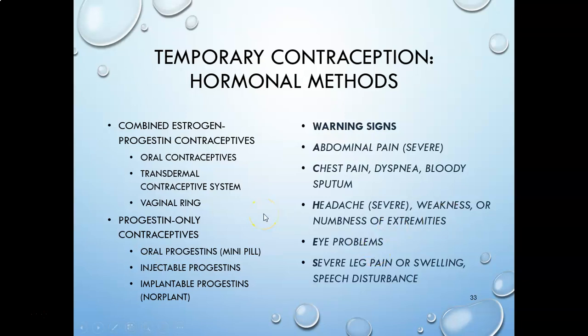The reason they're differentiated is important. The ACHES acronym on the right side of the screen lists warning signs you need to know — these all point to blood clots. When thinking of oral contraceptives, blood clots are what most people know about, especially for people over the age of 35 who are smokers. They really should not be taking combined oral contraceptives. It is the estrogen that causes that increased risk of blood clots.